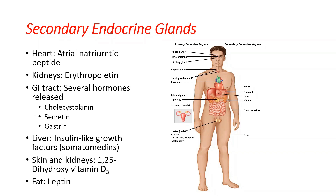Contrasting that, secondary endocrine organs are organs or glands that have an entirely different primary function. The heart is not mainly involved in endocrine signaling — it's involved in the circulatory system — but it also secretes a hormone, giving it a secondary endocrine function. It secretes atrial natriuretic peptide, or ANP, a peptide hormone that helps balance sodium and water regulation. The kidneys are mainly involved in waste processing and filtering the blood, but they also secrete erythropoietin, which stimulates new red blood cell production from the bone marrow.